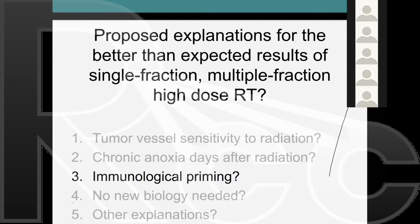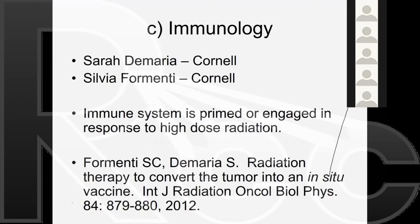The third theory is immunology. Maybe the immune system is primed after a large dose of radiation, producing antigens that are expressed, leading the immune system to eliminate cancer cells. This was proposed by Sylvia Formenti and Sarah DiMaria, both now at Cornell. In a series of papers and clinical trials, they showed that the immune system strongly influences response to radiation. Questions remain about whether the same antigens are expressed in normal tissue and whether that produces normal tissue toxicity.